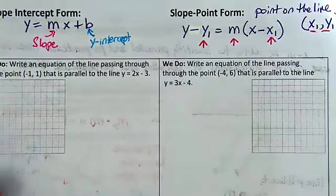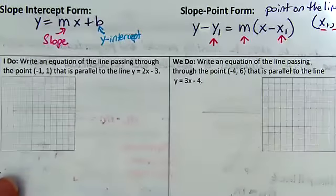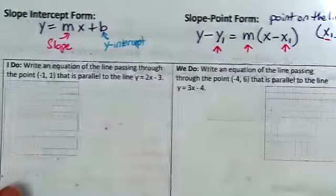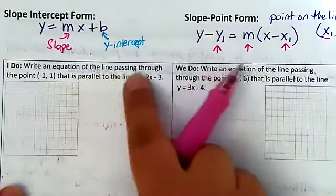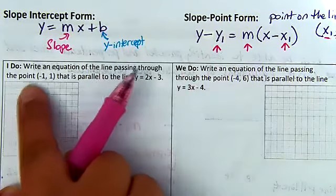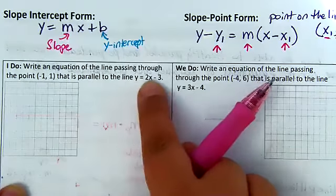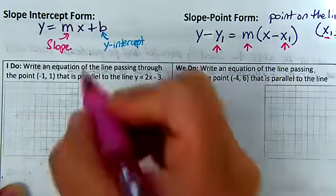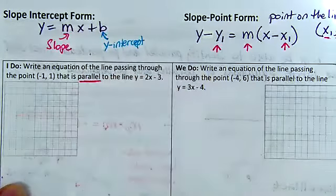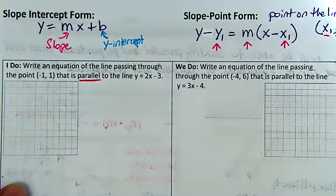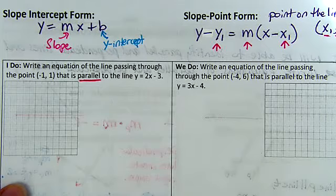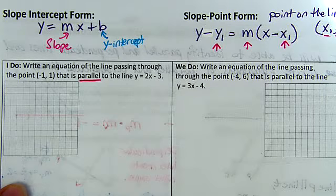We'll use point-slope form to write equations of parallel and perpendicular lines, paying attention to whether the slopes will be the same or different based on our theorems. For example: write an equation of the line passing through the point negative 1, 1 that is parallel to the line y equals 2x minus 3.